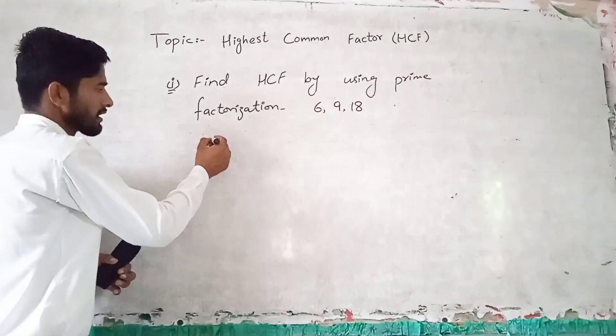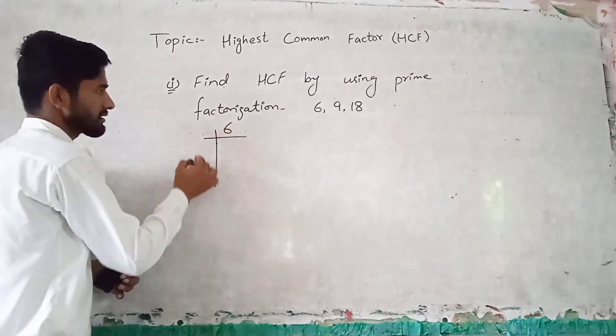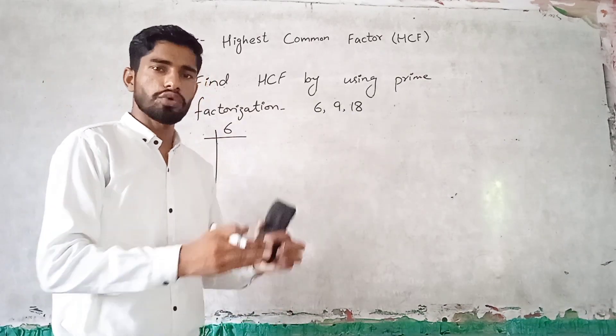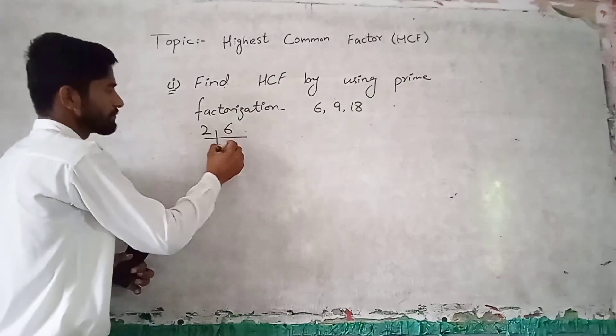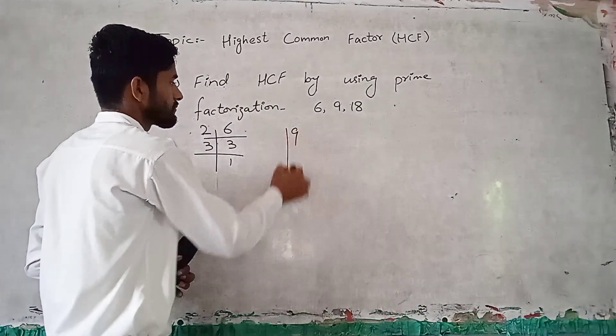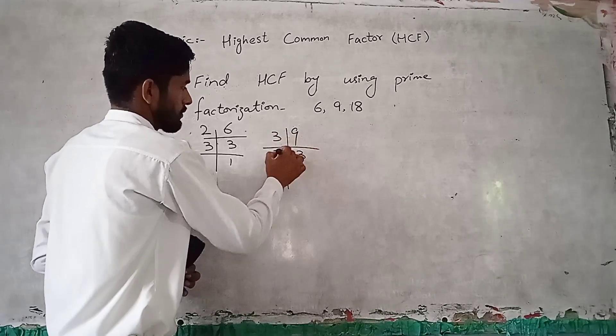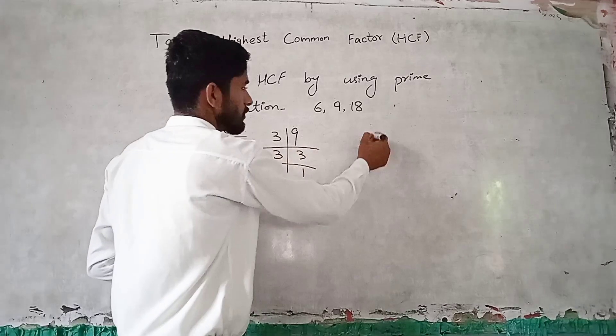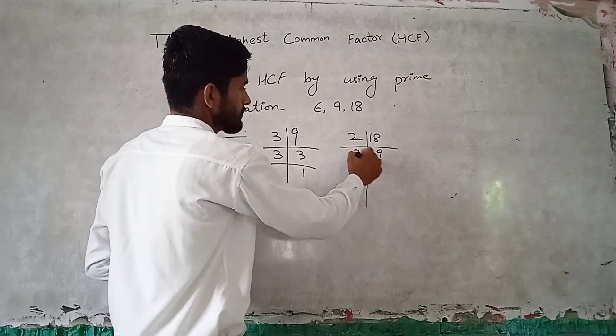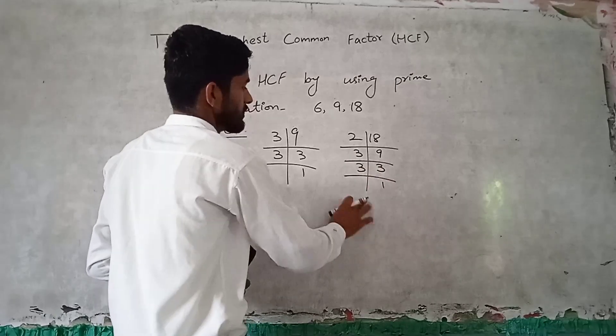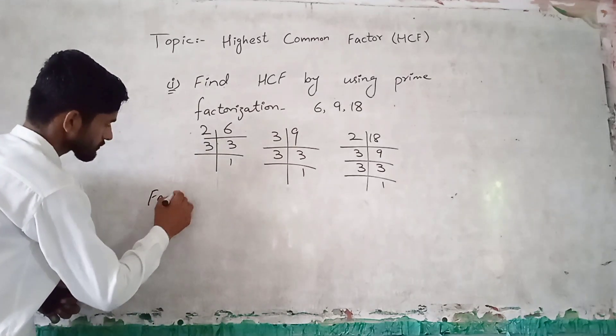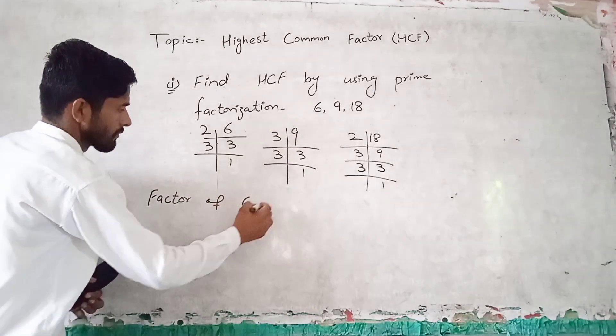For these numbers, we find the factors. 6 divided by 2 gives 3. For 9, 3 times 3 equals 9. Then for 18, we divide by 2 and get 9, and 3 times 3 equals 9. These are the factors: 6 factors, 9 factors, and 18 factors.